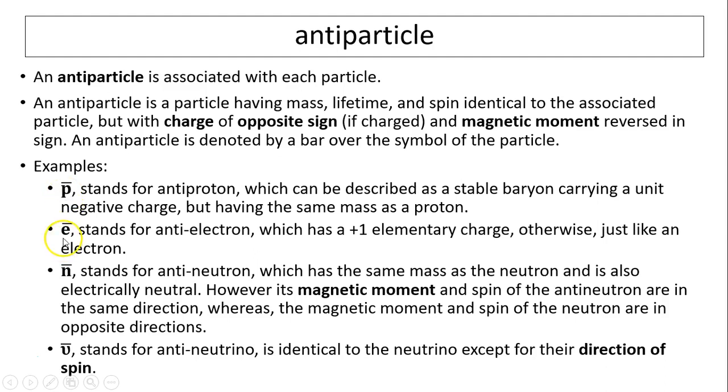Antiproton. Another one is anti-electron, also named positron. Anti-electron has positive one elementary charge. Otherwise, it's just like an electron, has the same mass, same spin. Neutron has no charge, so anti-neutron also has no charge. So what is the difference between anti-neutron and neutron? Anti-neutron has its magnetic moment and spin in the same direction. However, the magnetic moment and spin of neutron are in the opposite direction. And the anti-neutrino stands for anti-neutrino. This is again identical to neutrino. Remember neutrino has no charge, so the direction of spin is opposite.